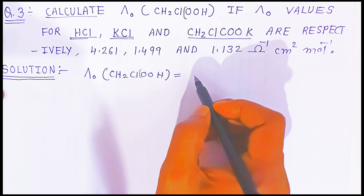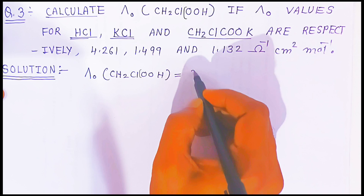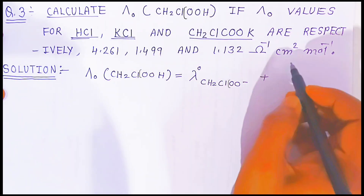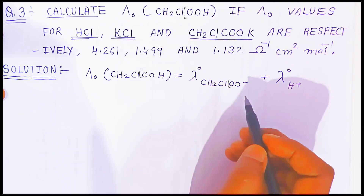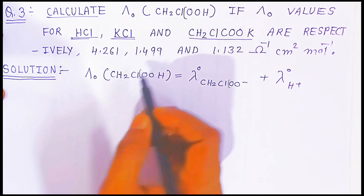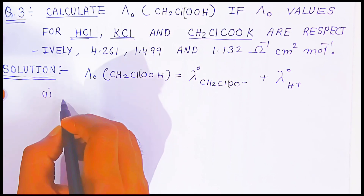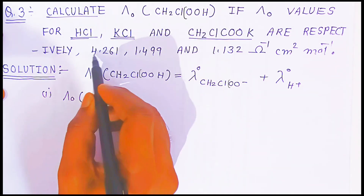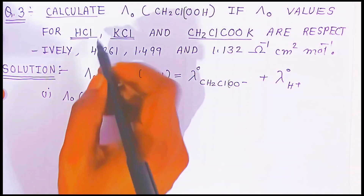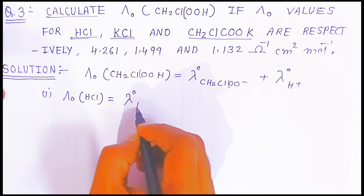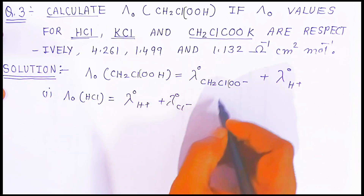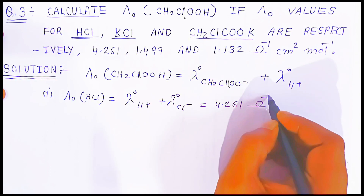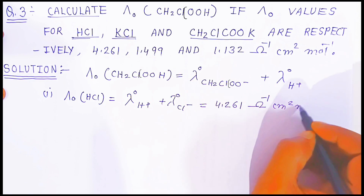When we write the ionic molar conductivity for monochloroacetic acid, we get λ⁰ of CH₂ClCOO⁻ plus λ⁰ of H⁺. For HCl, the ions produced at zero concentration give us λ⁰ of H⁺ plus λ⁰ of Cl⁻, which equals 4.261 ohm⁻¹ cm² mol⁻¹. This is equation number one.